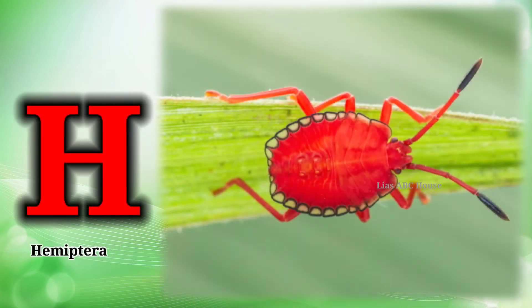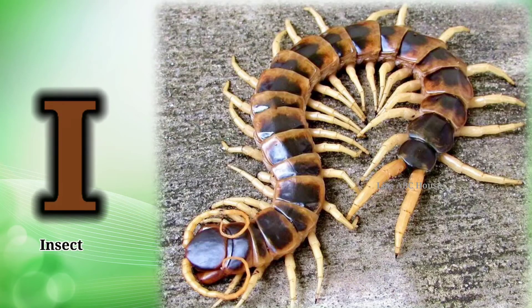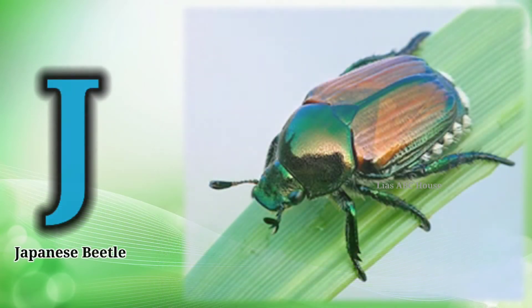H is for Himichora. I is for Incense. J is for Japanese Middle.